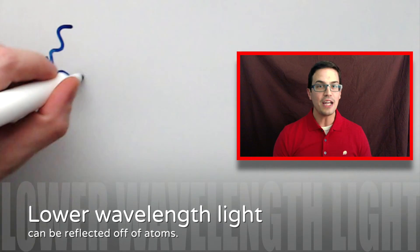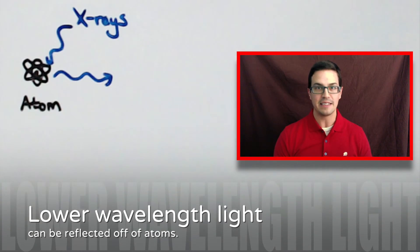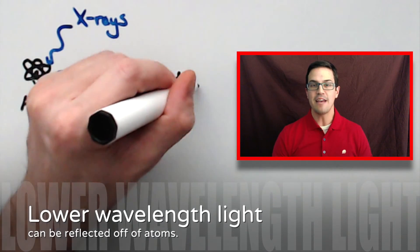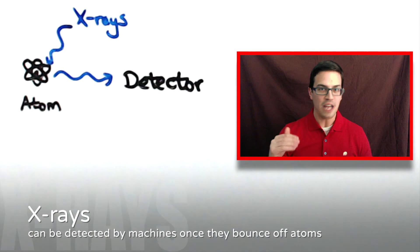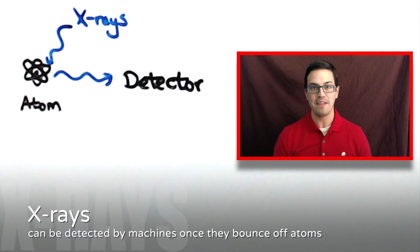However, we can use lower wavelength light to detect atoms. X-rays have a much lower wavelength than visible light, so much smaller that we can't even see x-rays ourselves. But the x-rays that we shine onto atoms and then reflect off the atoms can be detected, and we can use those detectors to paint a better picture of what the atom actually looks like.